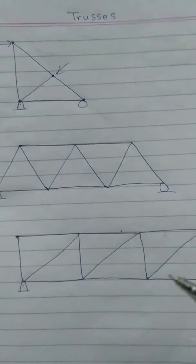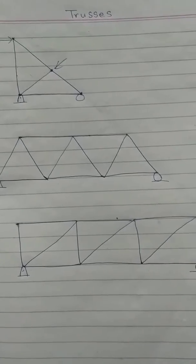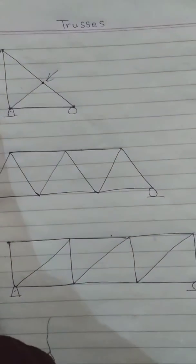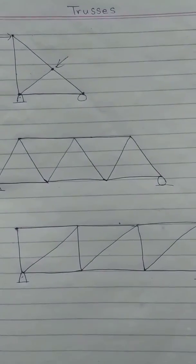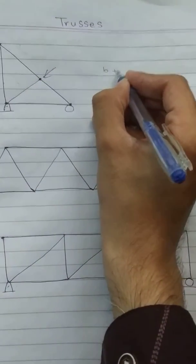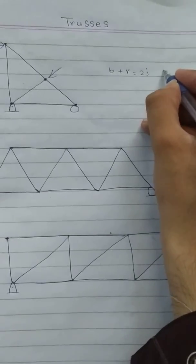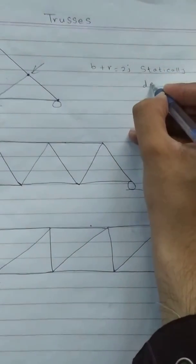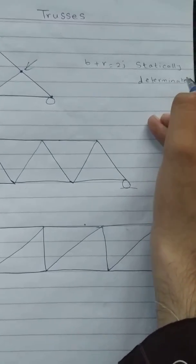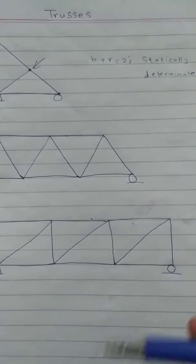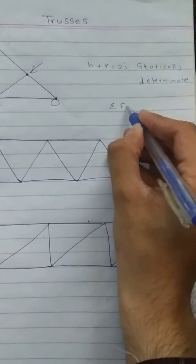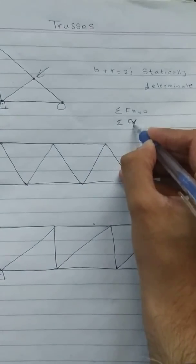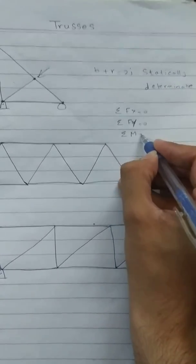Trusses can bear a lot of load inside bridges. These are mostly used for civil engineering structures. There is an equation to determine whether a truss is statically determinate or indeterminate: b + r = 2j. If it satisfies this equation then it will be statically determinate, meaning we can solve that truss by using the equations of equilibrium. Sigma Fx, summation of forces in x direction equals zero, summation of forces in y direction equals zero, and summation of moments equals zero.